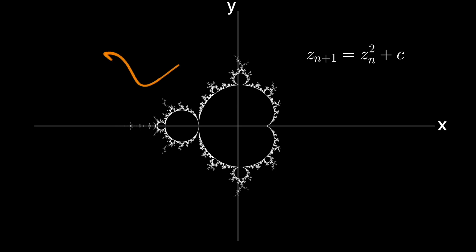We also know that if the absolute value of the iteration is ever greater than 2, that is, leaves the circle of radius 2, it will always diverge.